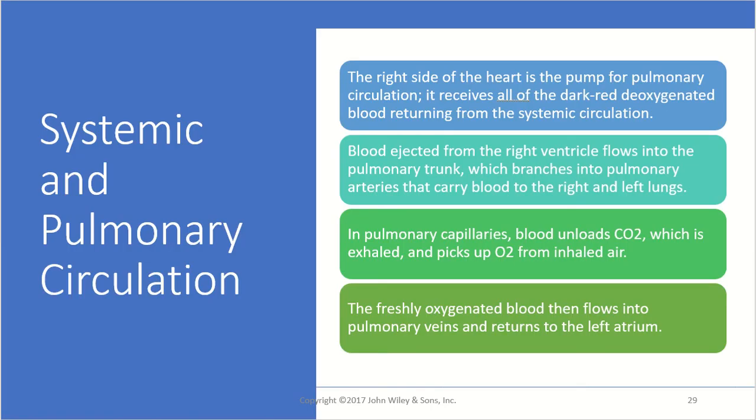The right side of the heart pumps blood for the pulmonary circulation. It receives dark red, deoxygenated blood returning from the systemic circulation. Blood is ejected from the right ventricle into the pulmonary trunk, which branches into pulmonary arteries carrying blood to the right and left lungs. In the pulmonary capillaries, blood offloads CO2, which is exhaled, and picks up oxygen from inhaled air. The freshly oxygenated blood then flows into the pulmonary veins and returns to the left atrium, and the cycle repeats.